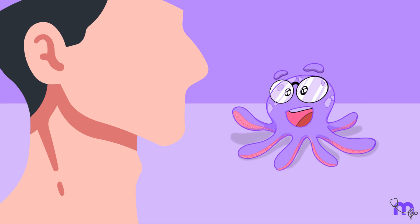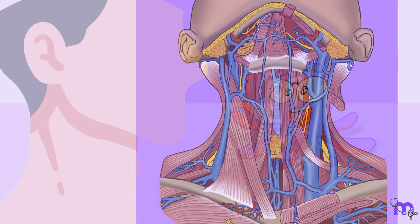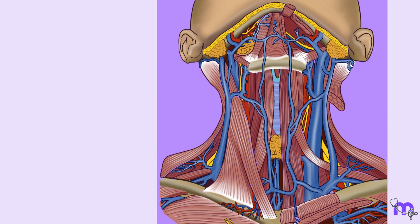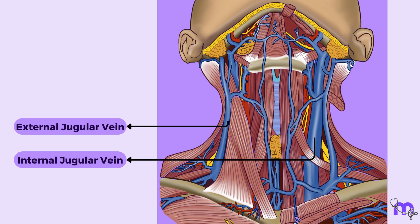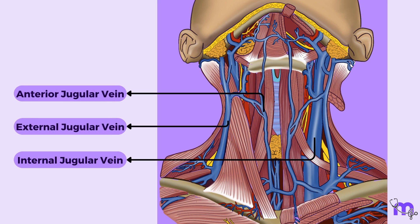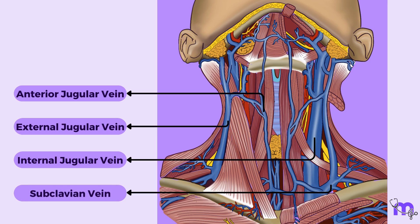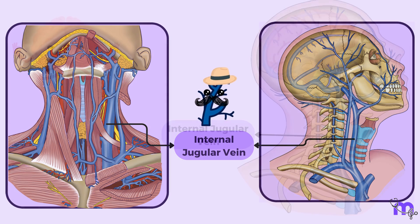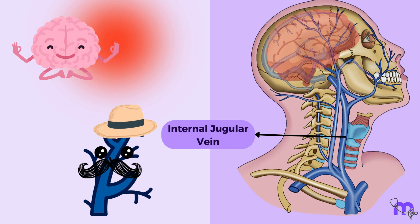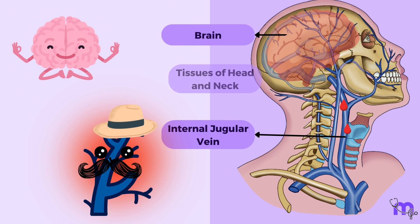Hi, we meet again. In this video we will discuss the veins of the neck, i.e. the three jugulars namely internal, external and anterior, and the subclavian vein. The internal jugular vein plays a vital role as the principal vein responsible for draining blood from the brain and most of the other tissues in the head and neck.